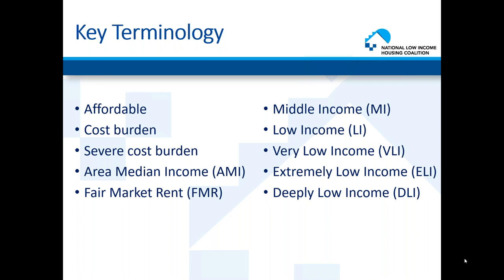A home is considered 'affordable' when a household spends no more than 30% of their gross income on rent and utilities — this is HUD's definition. When a household pays more than 30%, they are considered 'cost burdened.' When they pay more than 50%, they are 'severely cost burdened.' These are technical terms defined by HUD, and severely cost-burdened households are most likely to experience homelessness.